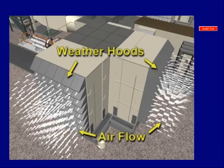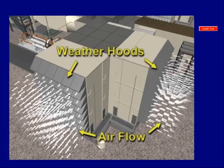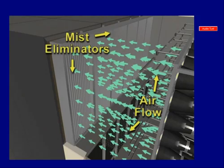Ambient air first enters the filter housing through a weather hood and screen that protects the filters from the effects of rain, sun, and debris. The air then goes through an evaporative cooling section that maximizes the gas turbine's output on hot or dry days. Downstream of the evaporative cooling are mist eliminators that capture moisture.